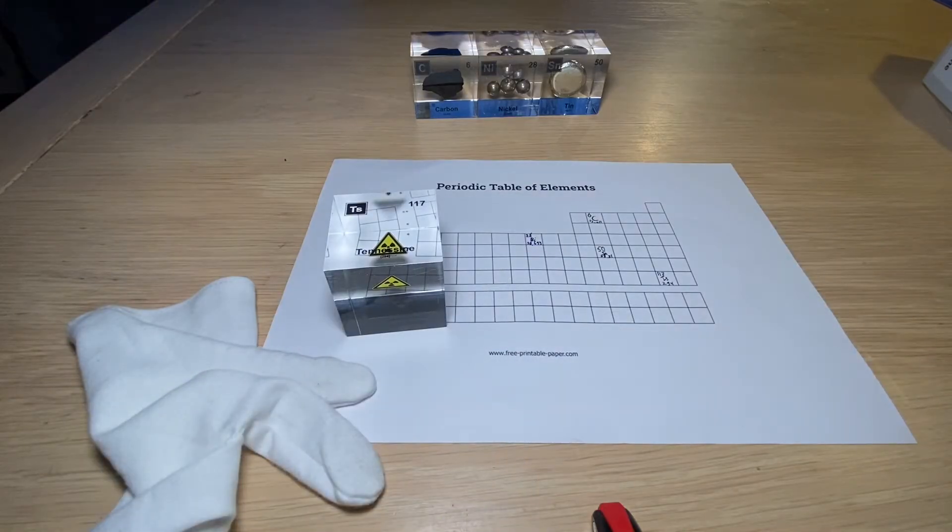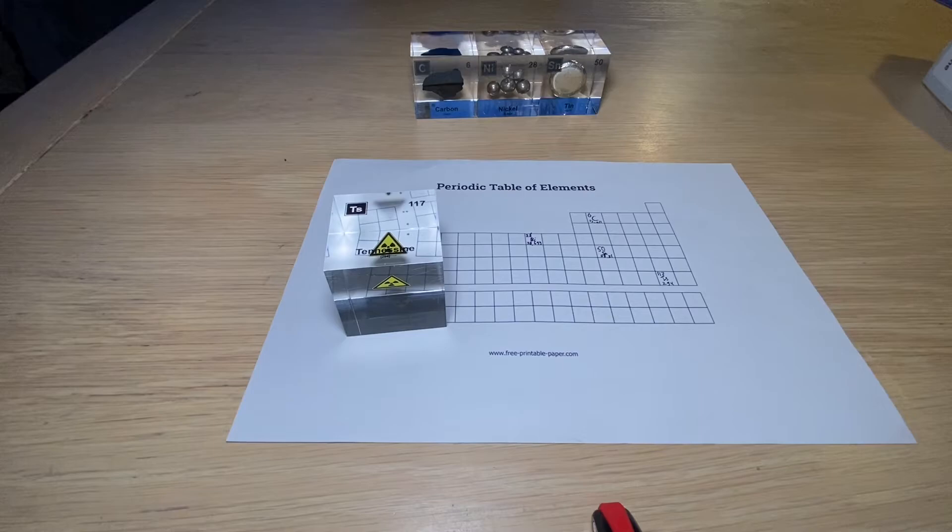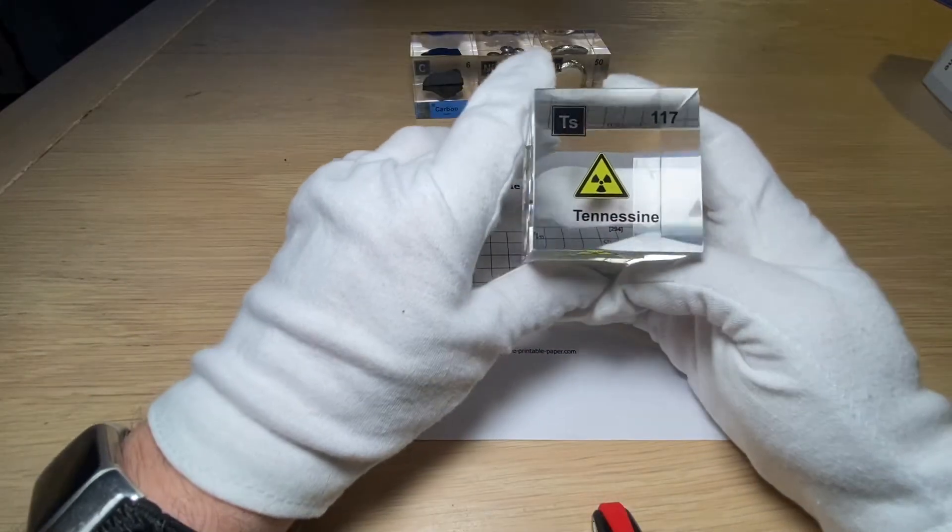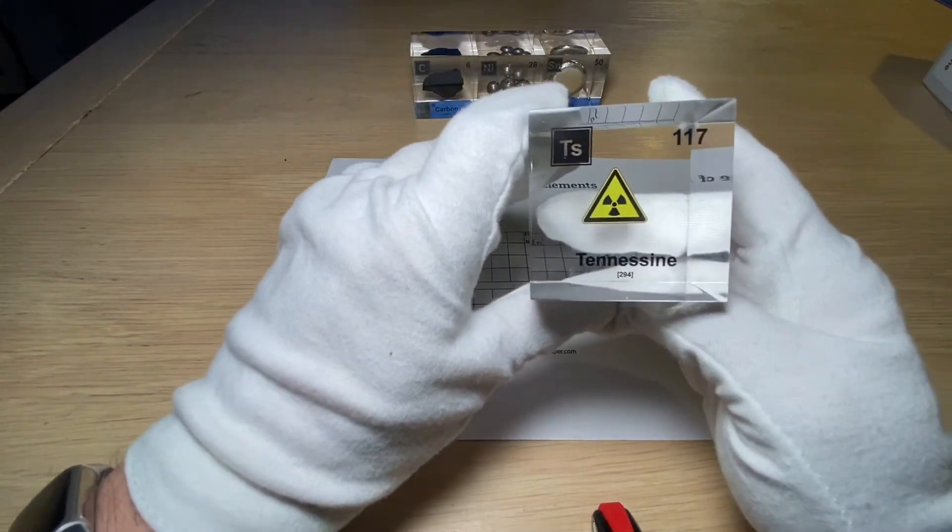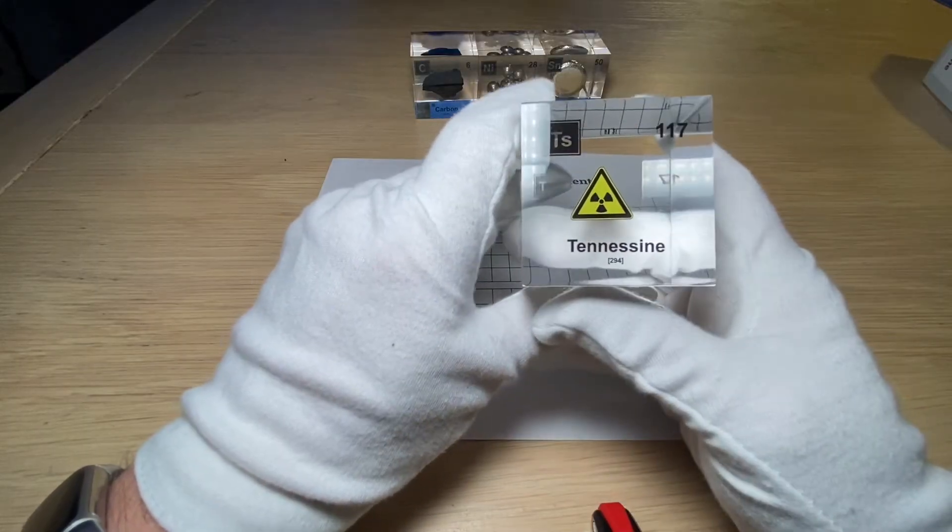And this is an approximate mass because this element does not occur in nature. Let's go through the characteristics first. So first of all, they sent me a cube with a placeholder, and second of all, I'm telling you guys that this doesn't even occur in nature. So what the hell is going on here?